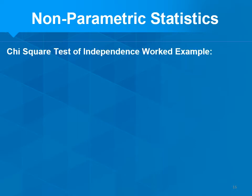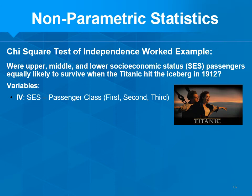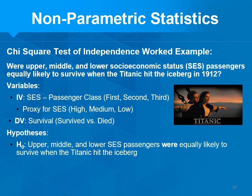Let's do the Titanic example. Were upper, middle, and lower socioeconomic status passengers equally likely to survive when the Titanic hit the iceberg in 1912? We have one IV: passenger class — first, second, or third — used as a proxy for SES, since third class was for those without much money and first class was for the wealthy. Our dependent variable is survival: survived or didn't — a true nominal variable. The null: upper, middle, and lower SES passengers were equally likely to survive — no relationship between SES and survival. The alternative: they were not equally likely to survive — there is some relationship.